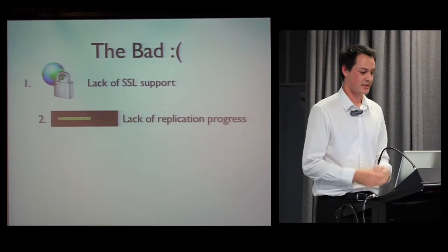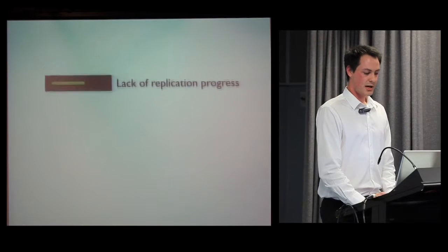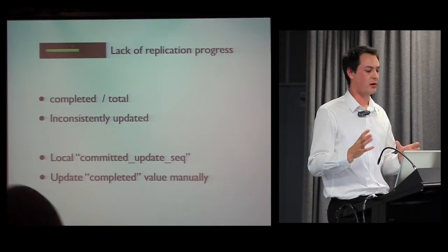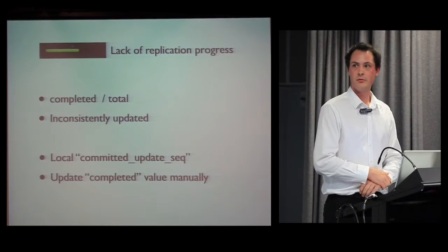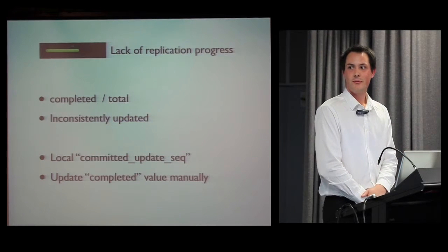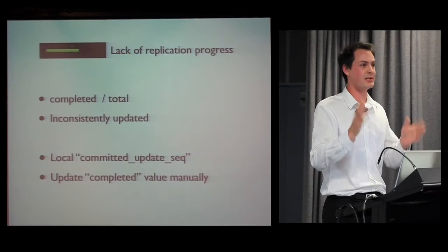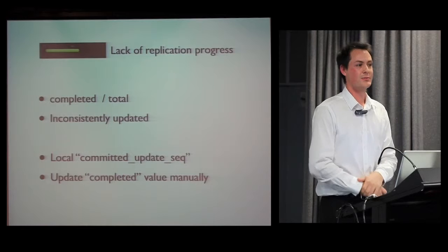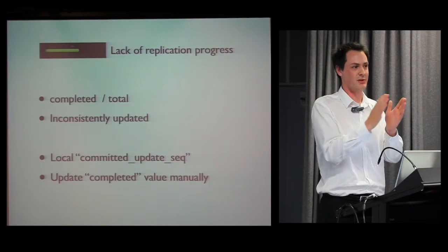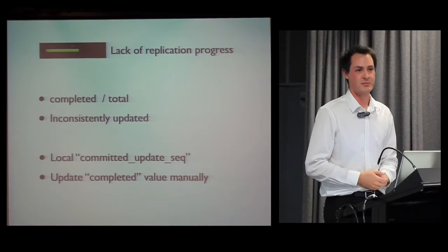The second thing the business wanted was replication progress. Couch provides this via the active tasks URL — you get a completed and total value of how far you've gotten through. It worked, but the problem was it just wasn't updated regularly enough. The number would be at 1-2% updating nicely, then sit on 2% for ages, and then suddenly jump to 90%. It seemed like there was some kind of back-off preventing regular updates to this status value.